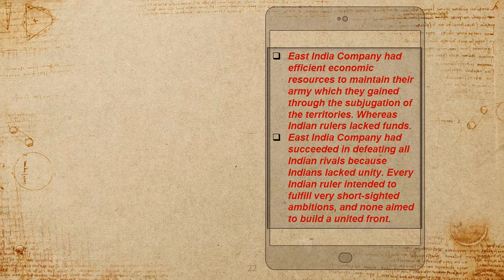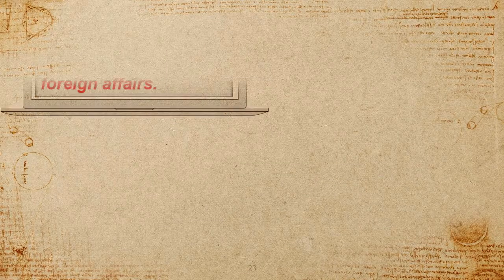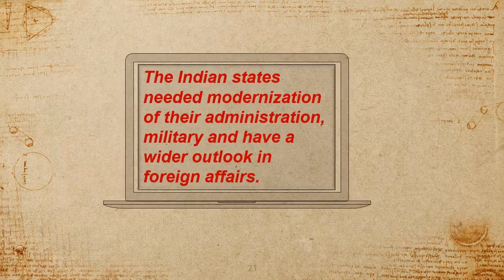The East India Company succeeded in defeating all Indian rivals because Indians lacked unity. Every Indian ruler intended to fulfill very short-sighted, ambitious goals and did not aim to build a united front. The Indian states also needed modernization of their administration, military, and a wider outlook in foreign affairs.